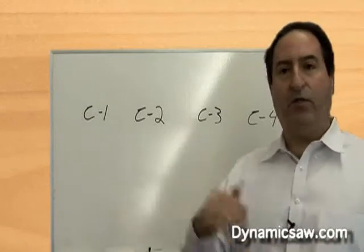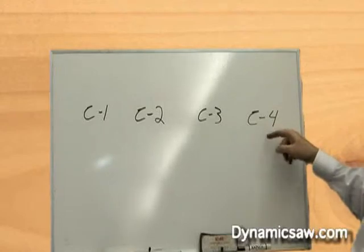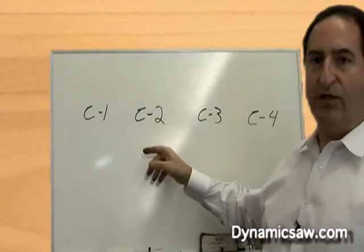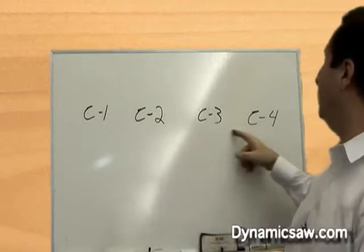Now the more tungsten we have, it goes up the C scale. The more cobalt we have, it's lower on the C scale. So cobalt is used for toughness and tungsten is used for hardness.